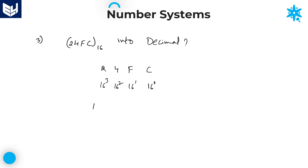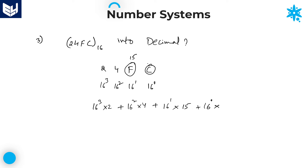Now do the calculation: 16 power 3 into 2, plus 16 squared into 4, plus 16 power 1 into F. What does F indicate? F is 15, so write 15 here. Plus 16 power 0 into C. What does C indicate? A equals 10, B equals 11, C equals 12. So write 12 here. 16 power 0 is 1; 1 into 12 is 12. And 16 into 15 is 240.